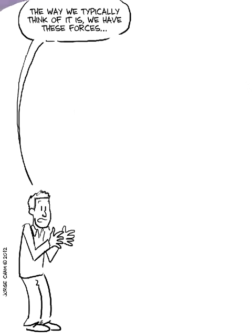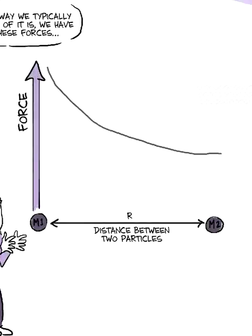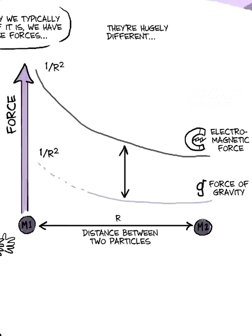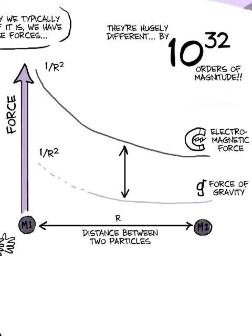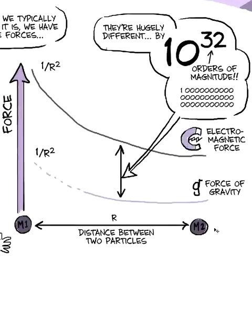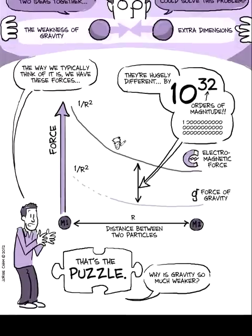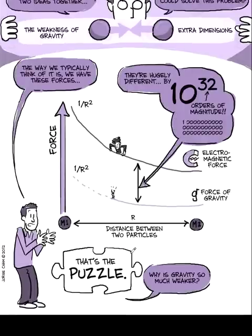The way we typically think of it is there's the electromagnetic force, and it goes as one over r squared. And there's gravity, which is down here, and it also goes as one over r squared. And they're hugely different. This is different by 32 orders of magnitude. One with a whole bunch of zeros after it. So that's the huge difference. And so that's the puzzle. Why is this gravitational force so much weaker than this electromagnetic one?